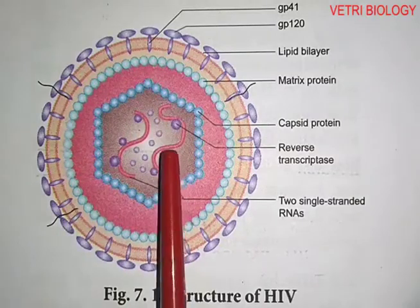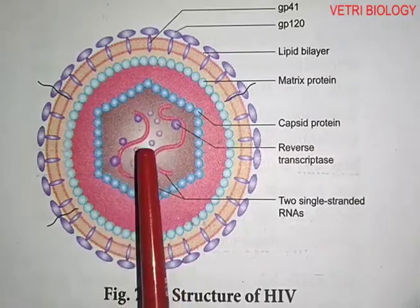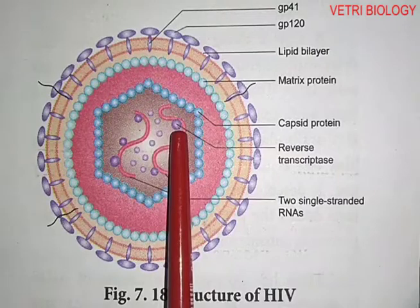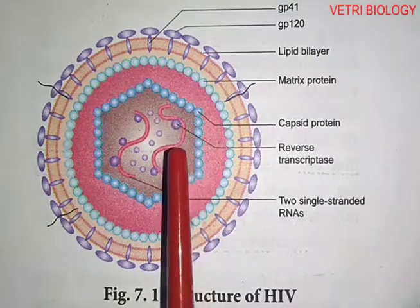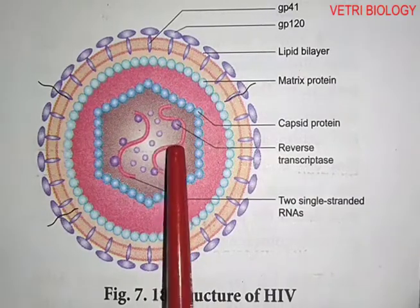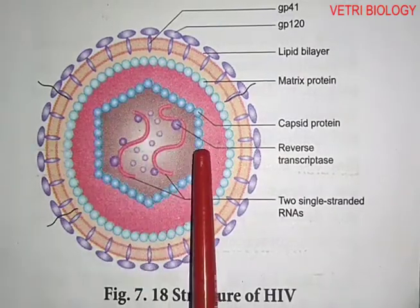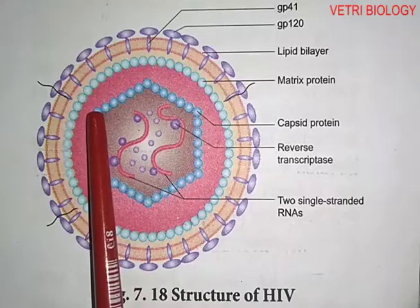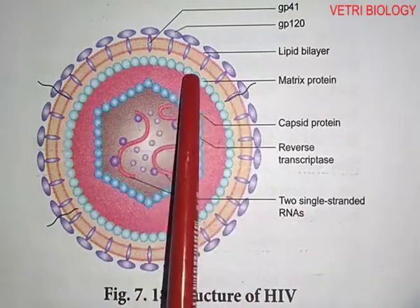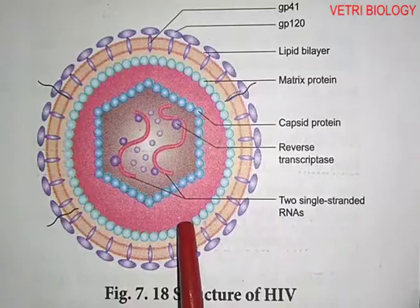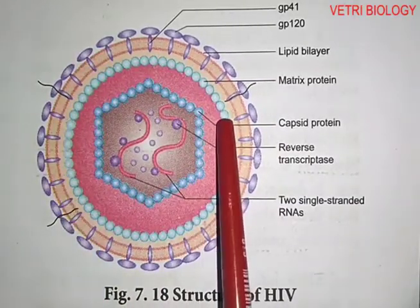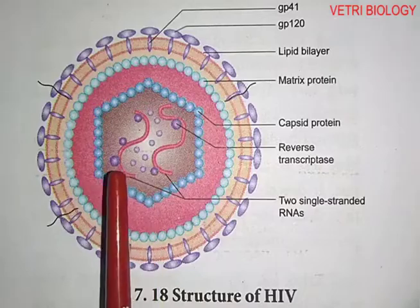At the center, two large single-stranded RNA molecules are present. Reverse transcriptase enzyme, protease enzyme, and ribonuclease enzymes are attached to the RNA. This core is covered by a protein capsid, and this structure is covered by another layer of matrix proteins. So this is the complete structure of HIV.